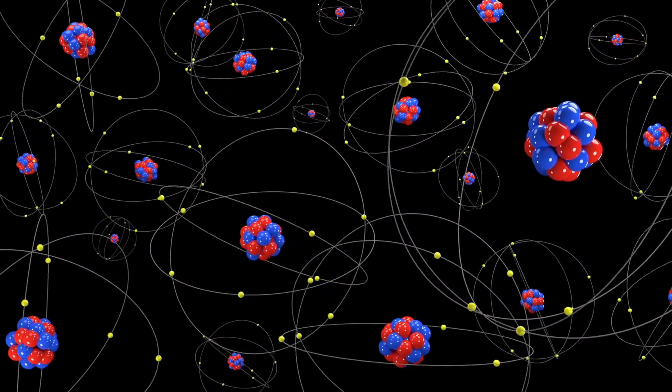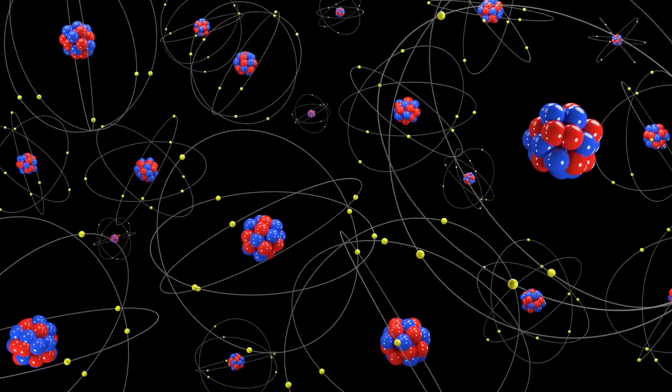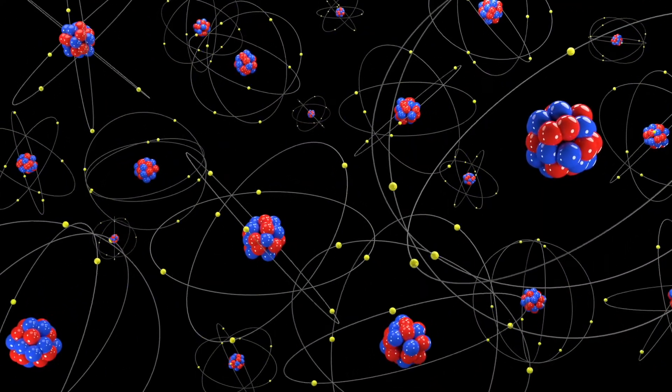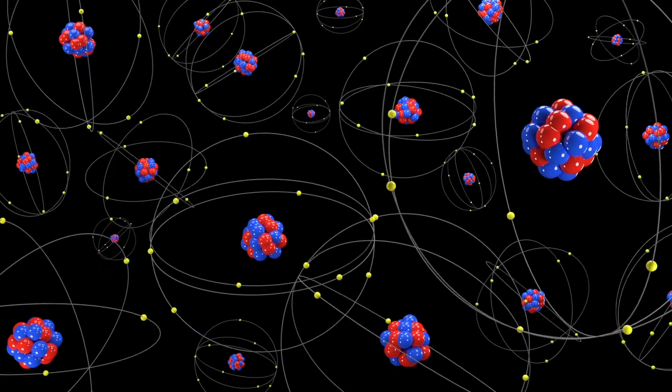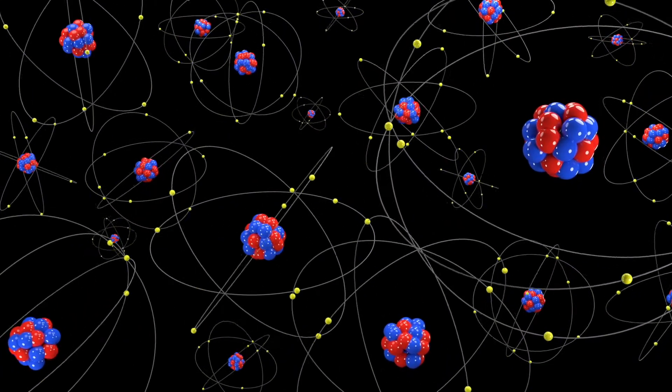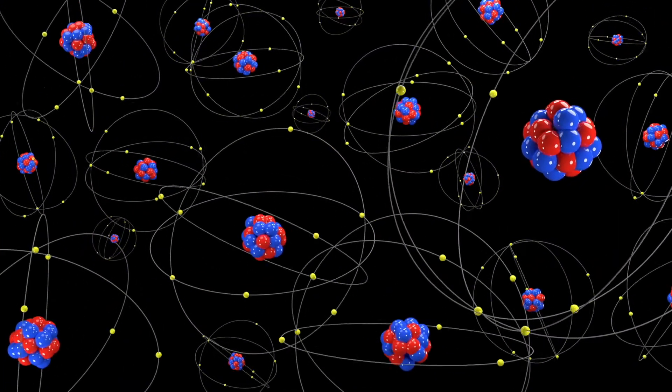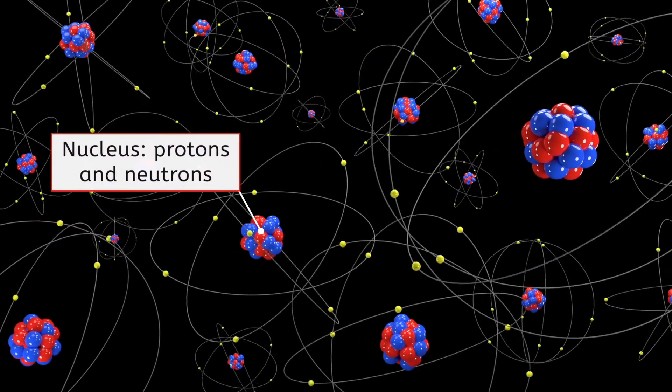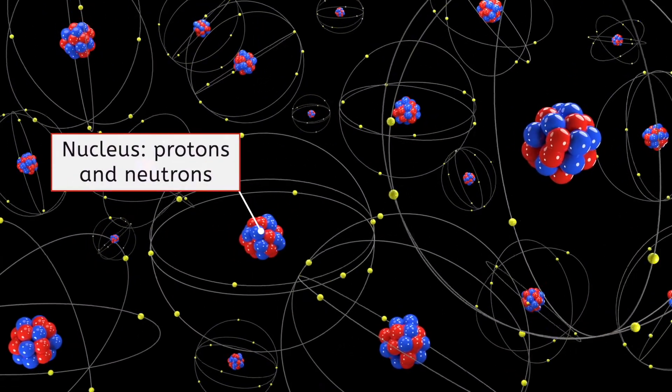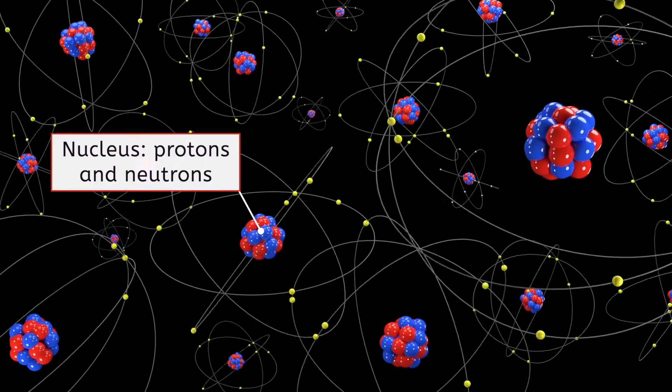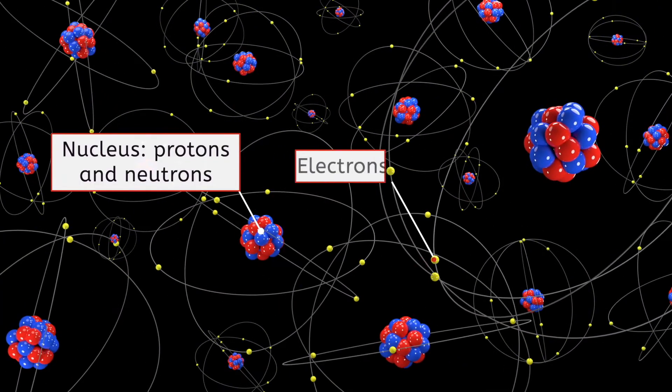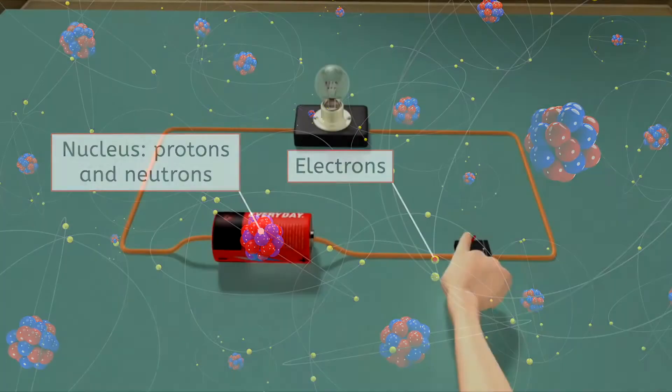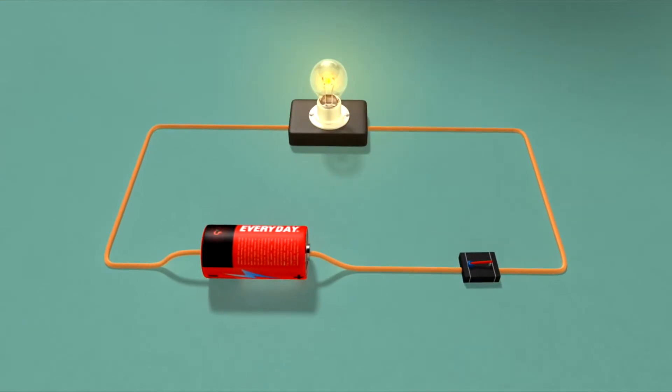Understanding electricity requires an understanding of atoms. You might have thought you had left that unit behind. Do you remember the parts of an atom? Which two subatomic particles are in the nucleus? Protons and neutrons. And which subatomic particles continuously zip around the outside? Electrons. Any guesses which one is involved in electricity? The name gives it away. It's the electrons.